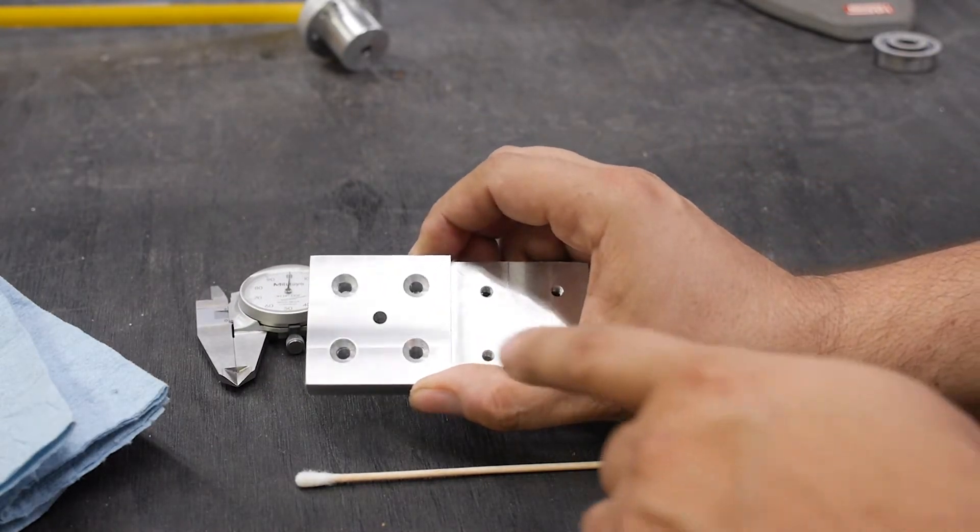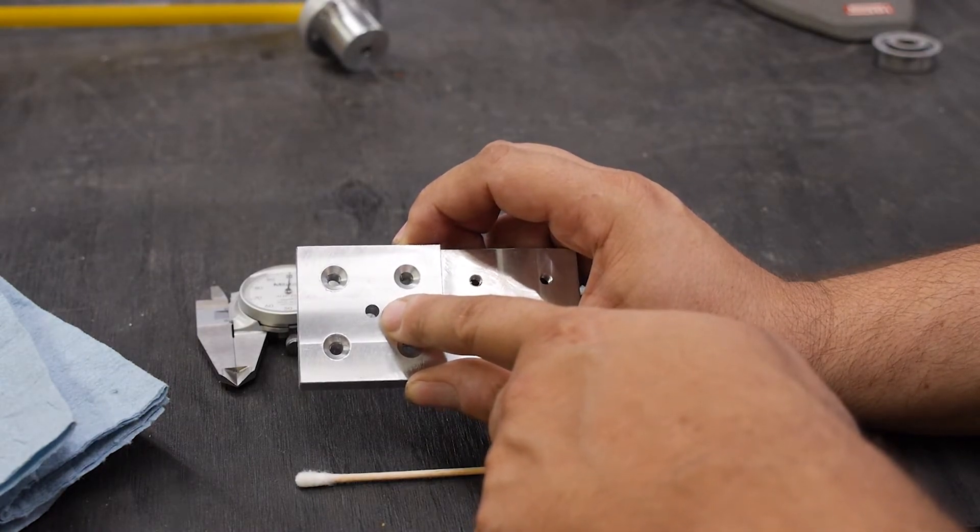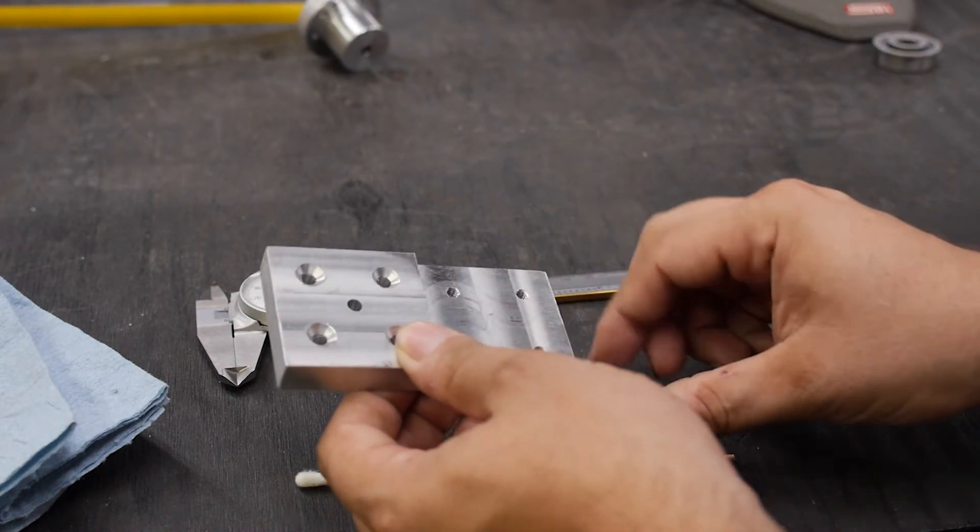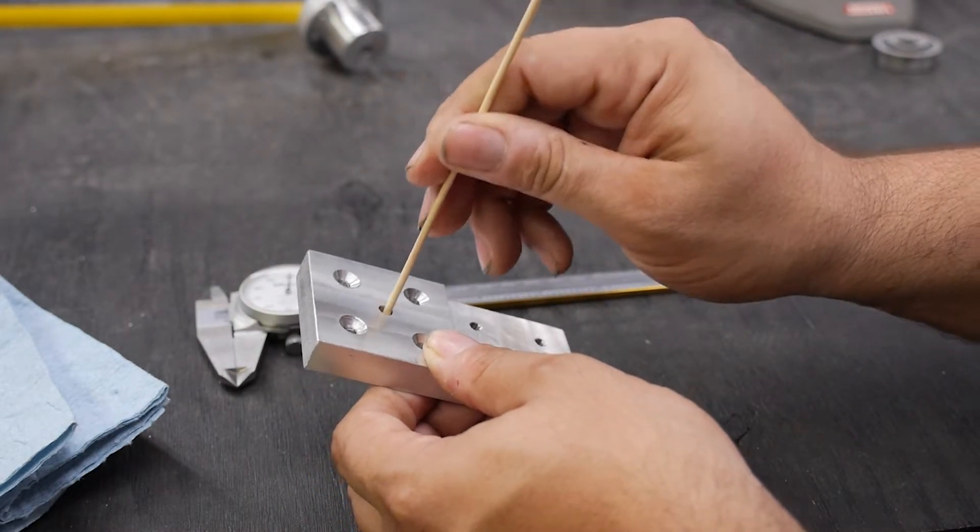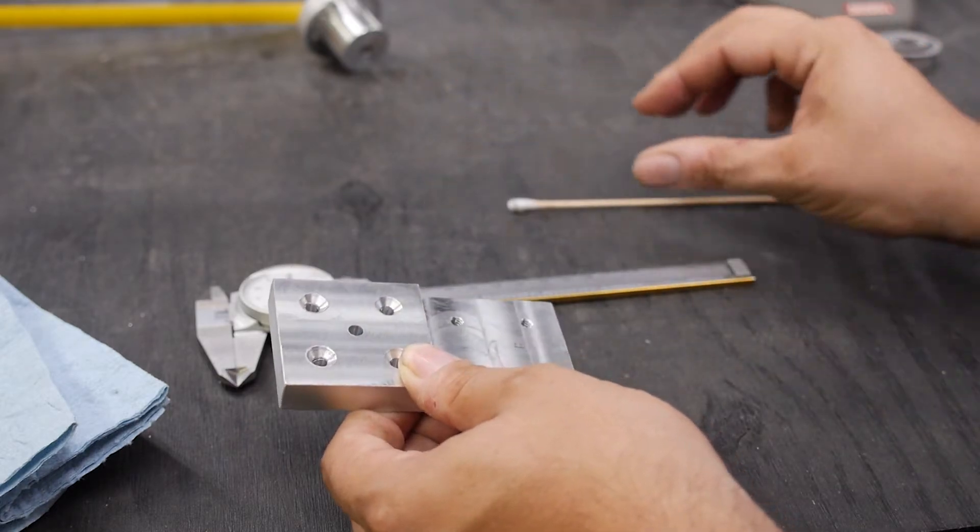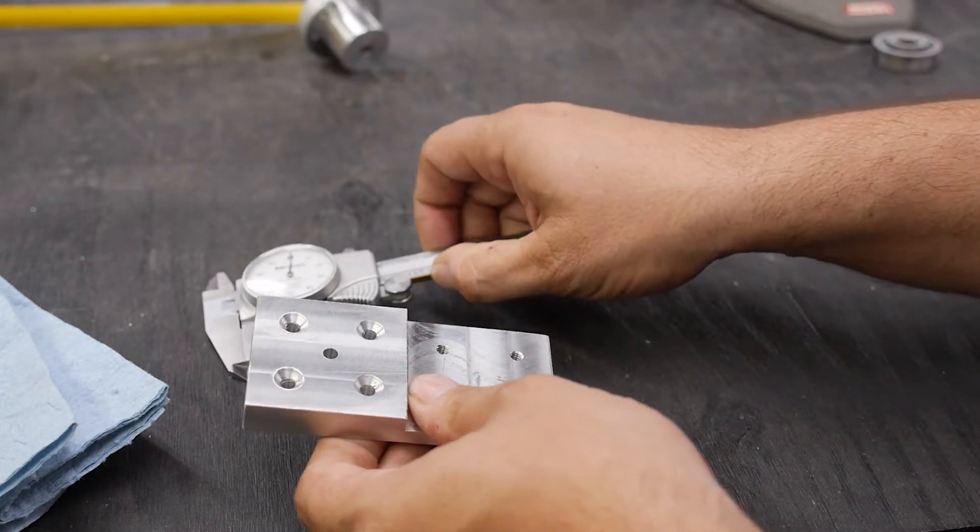In this case, we may desire to measure the internal hole size of this part. Before we can measure it, we need to clean it. So in this case, I just have a Q-tip. I'll clean it. And now we're ready to make the measurement.